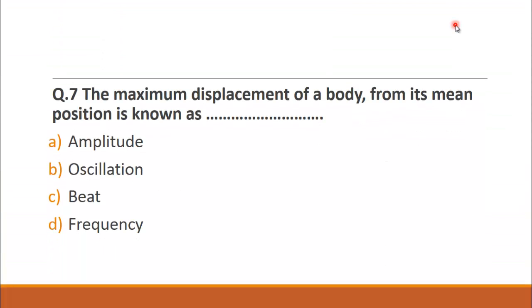MCQ number seven is: The maximum displacement of a body from its mean position is known as? A. amplitude, B. oscillation, C. beat and D. frequency. It is a simple one and its answer is A. amplitude.